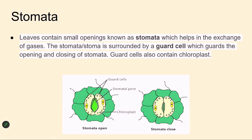Now about stomata — as I mentioned, stomata are very small openings present on leaves which help in gaseous exchange. There are two diagrams: open stomata and closed stomata. When stomata are open, the plant takes in carbon dioxide and releases oxygen. This process happens during the day; at night the stomata are closed. Stomata are guarded by guard cells, which help in the opening and closing. Guard cells contain chloroplasts with chlorophyll.